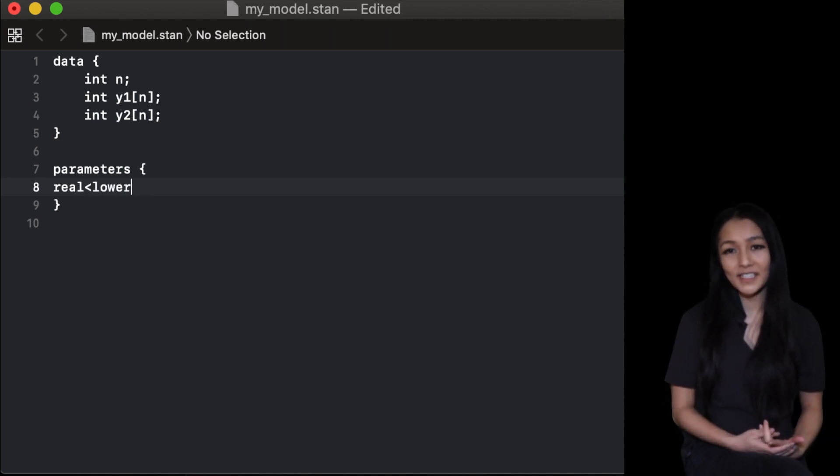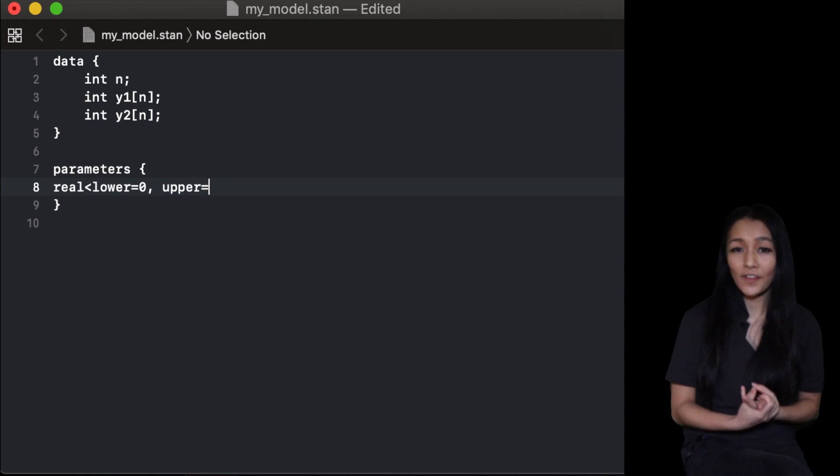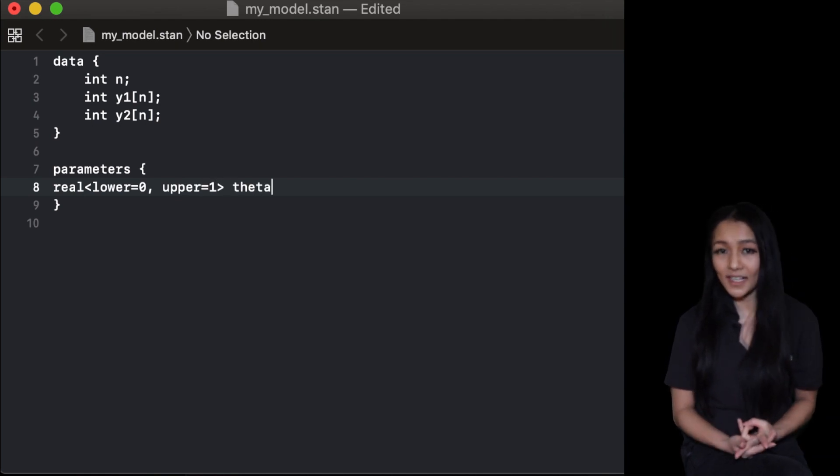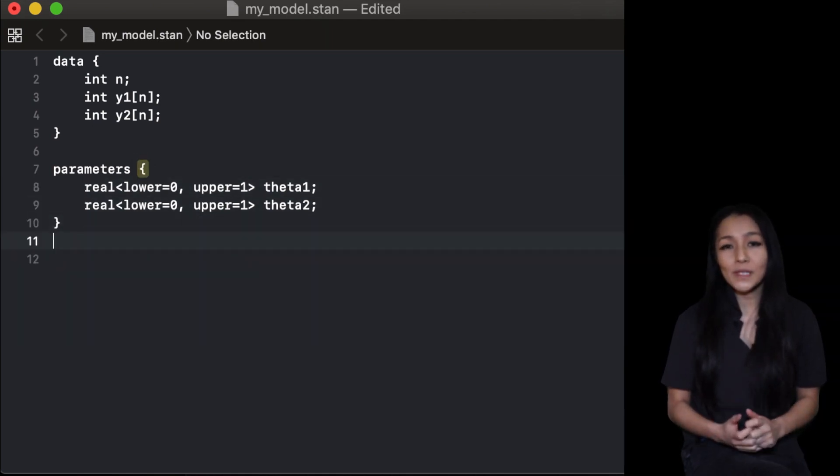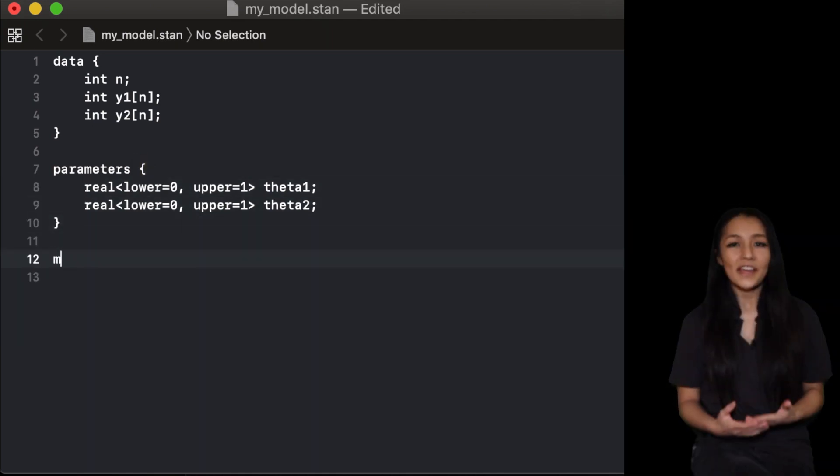In the parameters block, we need to declare the parameters. In this model, we have two parameters: the click-through rate for both Facebook and for Twitter. These are real arrays. They can take any value, but since they are probabilities, we give them a hard boundary of being between zero and one.